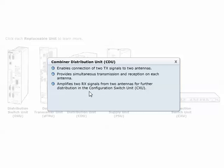The combiner distribution unit, CDU, enables connection of two TX signals to two antennas. The TX signal can be two combined signals or two uncombined signals. A CDU-G has no combining circuits. The combining takes place outside the CDU. It provides simultaneous transmission and reception on each antenna. CDU amplifies two RX signals from two antennas for further distribution in the configuration switch unit, CXU.